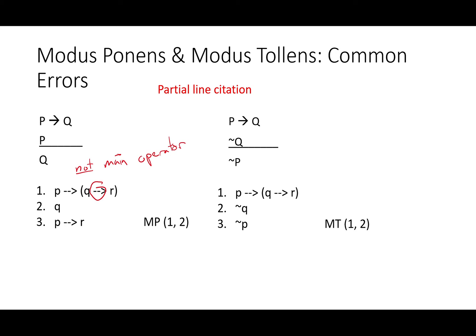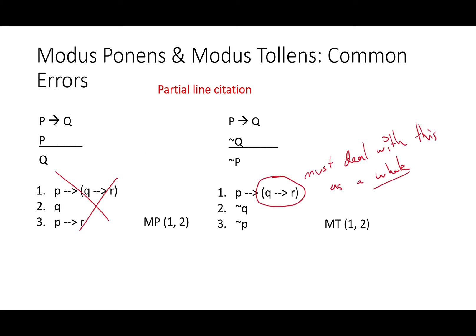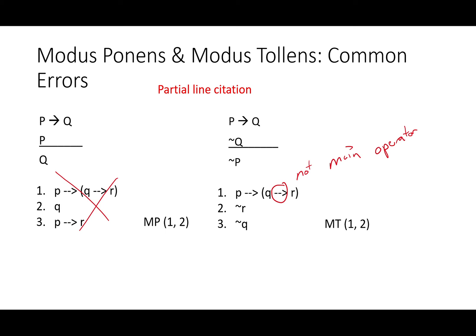We might try something like 'if P then R', just skipping through Q since we know Q is true — but that's not how modus ponens works. Modus tollens cannot use not R to get not Q either. The correct approach: if we have 'if not P then (if not Q then R)' and P, that gives us a modus ponens yielding 'if Q then R'. Or we could say 'it's not the case that if Q then R' — that would be a valid modus tollens giving not P. Both correct uses apply modus ponens or modus tollens to the main operator of the line, that is, something not inside any parentheses.